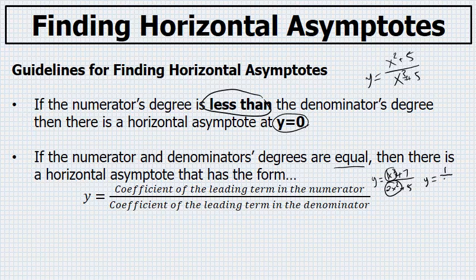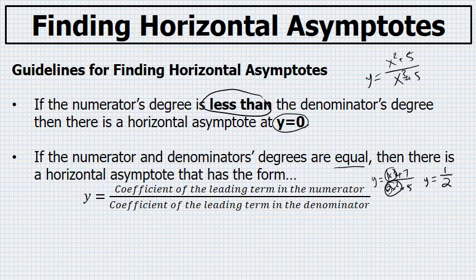The leading coefficient in the denominator is 2 — there was a 2 in front of the x squared — so there is a horizontal asymptote at the line y equals one half.